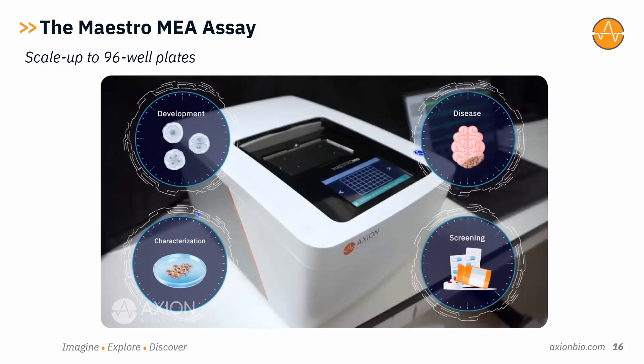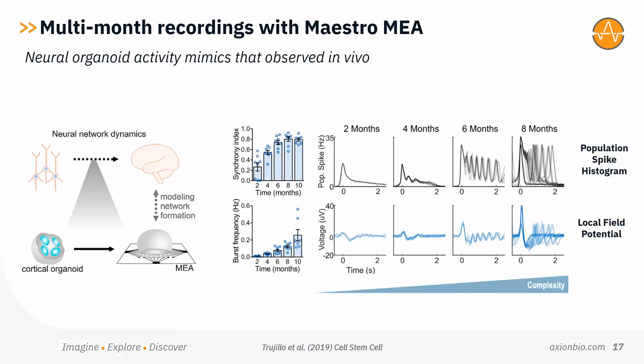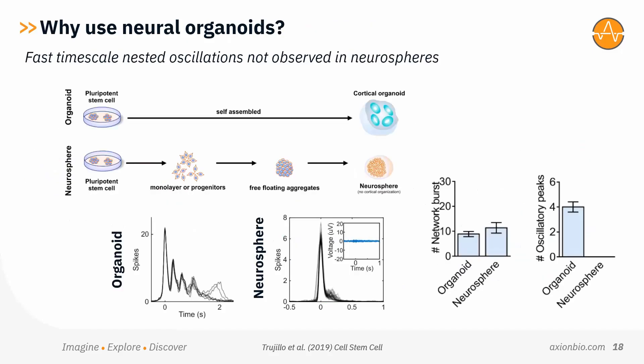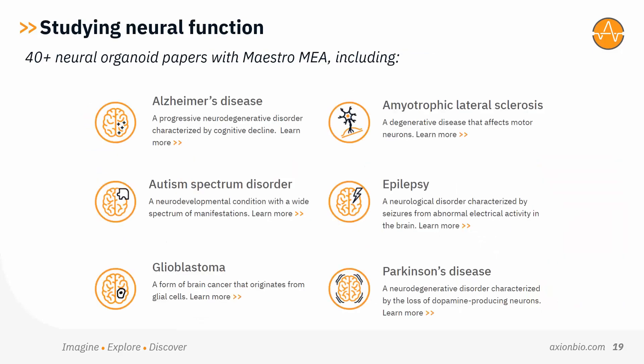Why is there so much interest in recording from neural organoids on Maestro MEA? A seminal paper from Cleber Trujillo in Alysson Muotri's lab demonstrated complex neural network activity that develops in neural organoids. After four months in culture, nested oscillations were detected in neural burst firing, which mimicked the types of activity seen in EEG from the developing human brain. Importantly, this complex neural activity was not present when the same cells were used to make neurospheres or 2D monolayers — it was only present in the self-assembling neural organoids. Over 40 publications have already been published on Maestro MEA using neural organoids, covering neurological disorders including Alzheimer's, ALS, autism, epilepsy, glioblastoma, and Parkinson's disease.